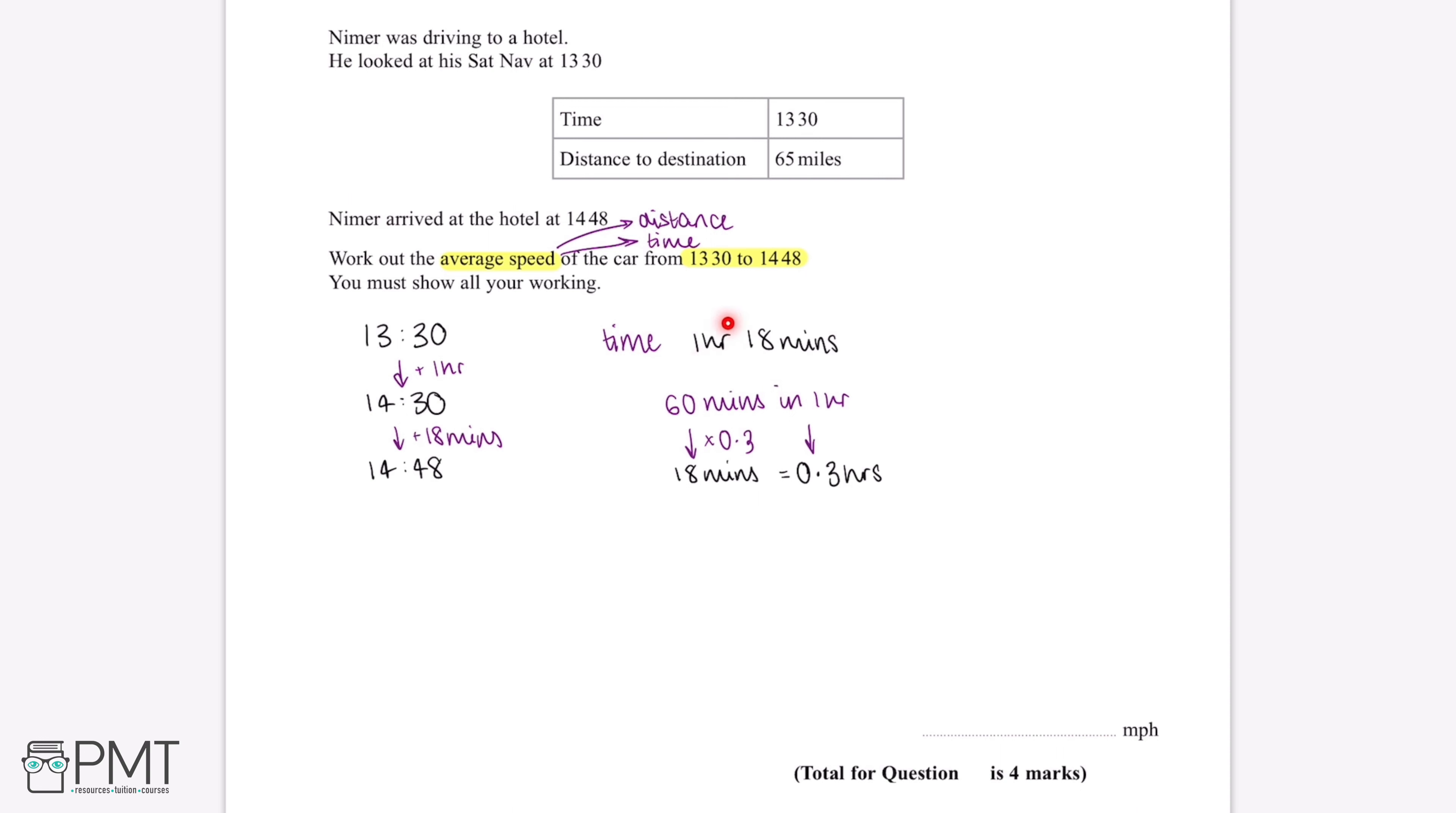If we add on the 1 hour, this means that the total time taken to travel the 65 miles is 1.3 hours.